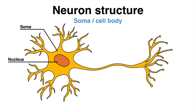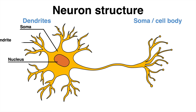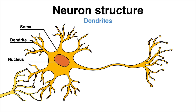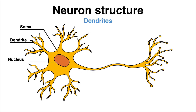There are branched projections, referred to as dendrites, extending from a neuron's cell body. Dendrites receive signals from other neurons or sensory cells, but more about this later.